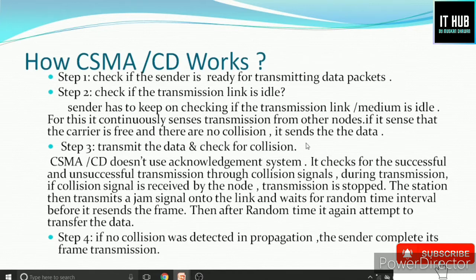Step 3: Send the data and check for collision. CSMA/CD does not use an acknowledgement system. It checks for successful or unsuccessful transmission through the collision signal — the collision signal is used as an acknowledgement. During transmission, if a collision signal is received by the node, transmission is stopped because the signal indicates the data is corrupted. The station then transmits a jam signal onto the link and waits for a random time interval before resending the frame. After that random time, it again attempts to transfer the data.